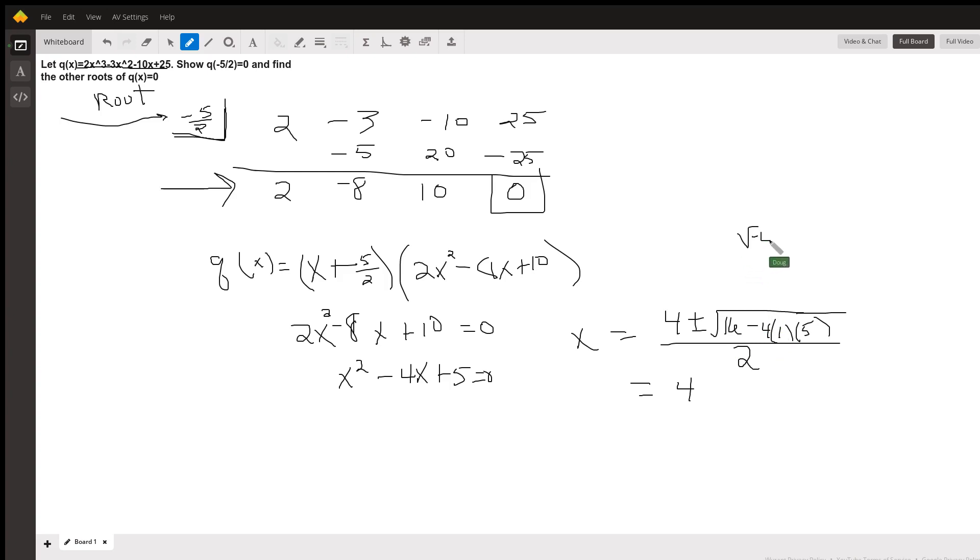The square root of negative 4 is a pure imaginary number, which we write as 2i. Square root of 4 is 2, square root of minus 1 is i. Every term in the numerator and in the denominator is divisible by 2.